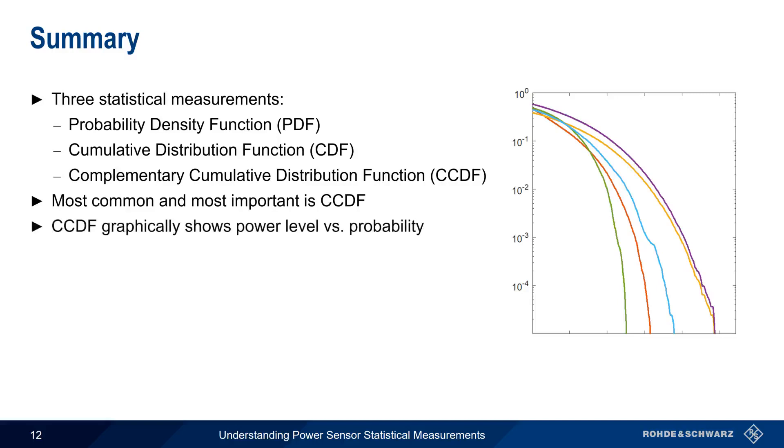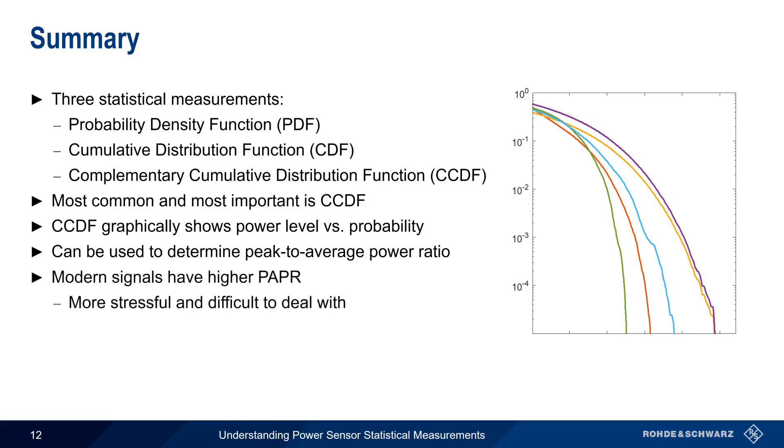CCDF graphically represents the percentage of time a signal reaches or exceeds a certain power level, and thus also provides information on the signal's peak-to-average power ratio. Modern modulation schemes have increasingly higher peak-to-average power ratios, and this places additional stress on both passive and active devices. Therefore, CCDF is an important measurement in designing and testing devices used in modern radio frequency applications. This concludes our presentation, Understanding Power Sensor Statistical Measurements. Thanks for watching.